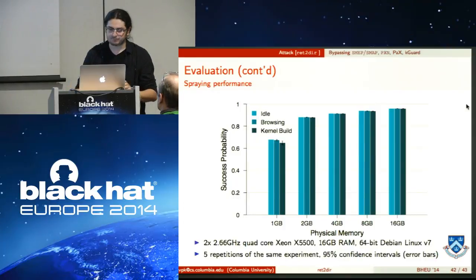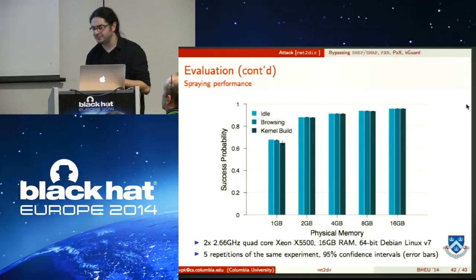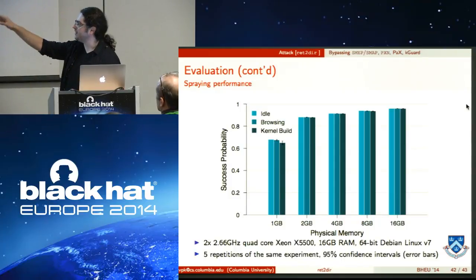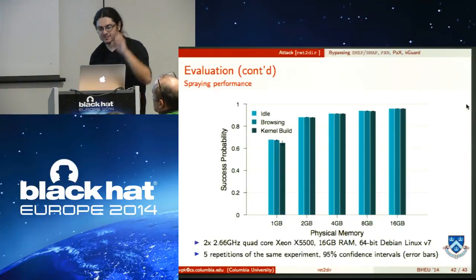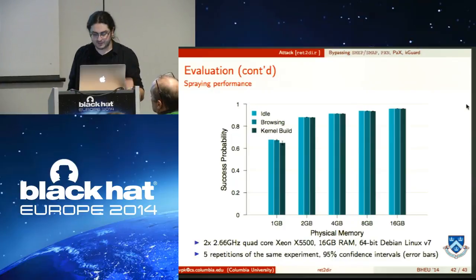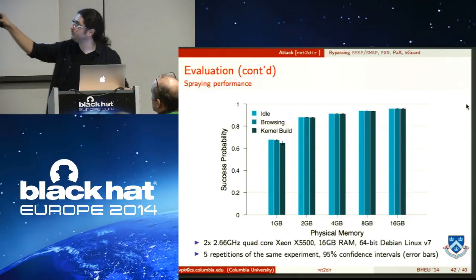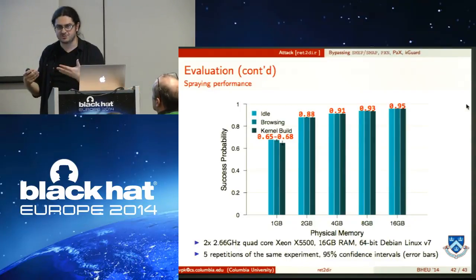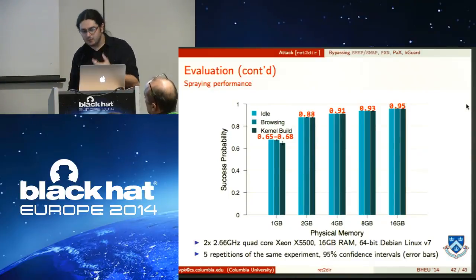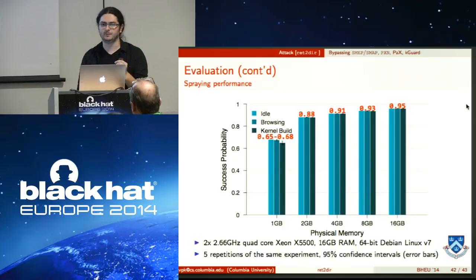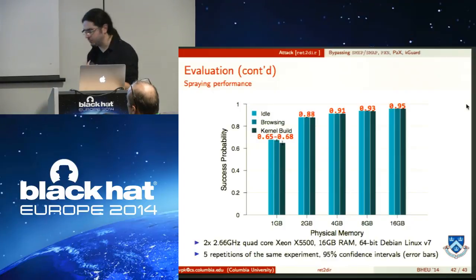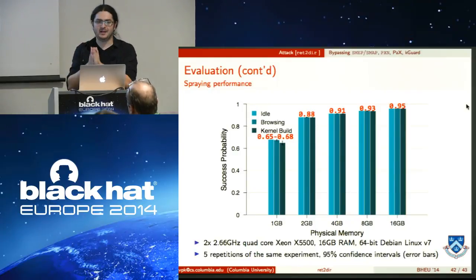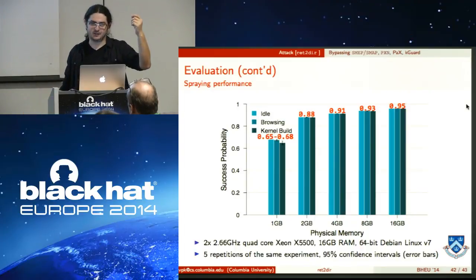For the probabilistic FISMAP spraying scenario, we measured success probability across various RAM sizes and system loads: idle, browsing, and kernel build. Even with only 1 GB of RAM under a kernel build workload — high contention — we achieved 0.65 to 0.68 success probability. As physical memory increases, success probability rises to 0.95, meaning we've filled nearly every page frame with the payload and almost always succeed when randomly selecting a target address.